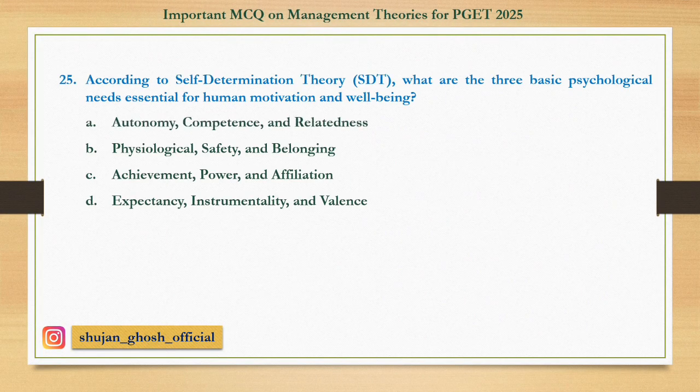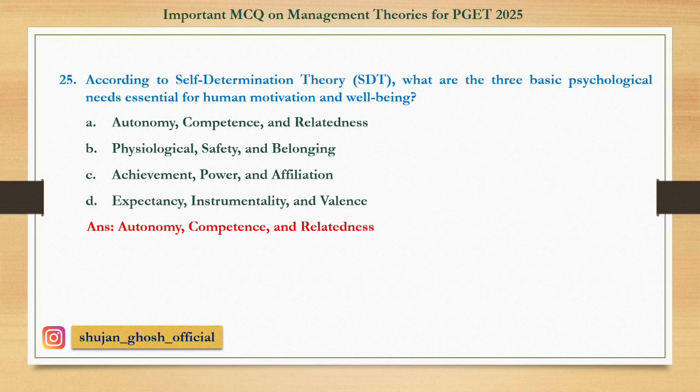Question 25: According to self-determination theory, what are the three basic psychological needs essential for human motivation and well-being? Option A: Autonomy, competence, and relatedness. B: Psychological safety and belongingness. C: Achievement, power, and affiliation. D: Expectancy, instrumentality, and balance. Answer is Autonomy, competence, and relatedness.